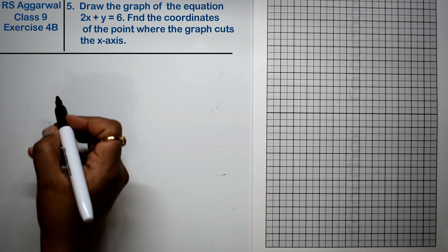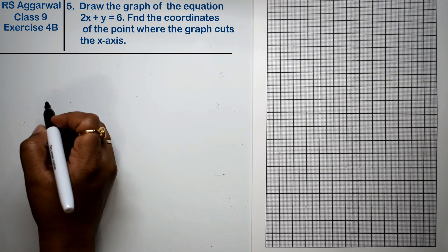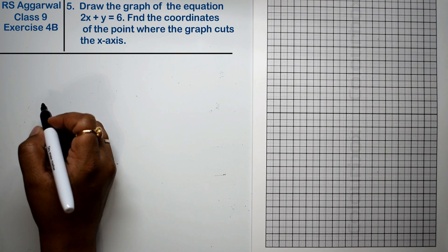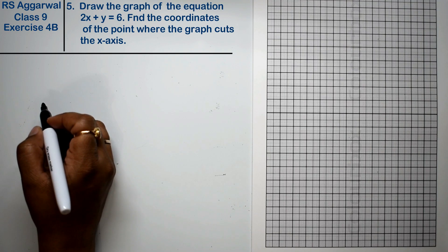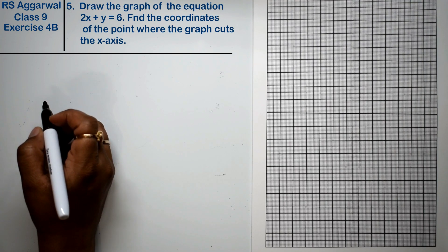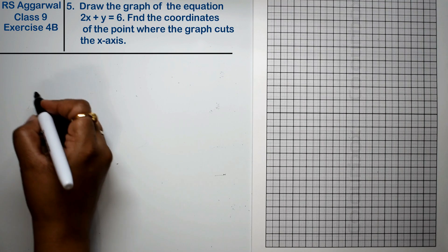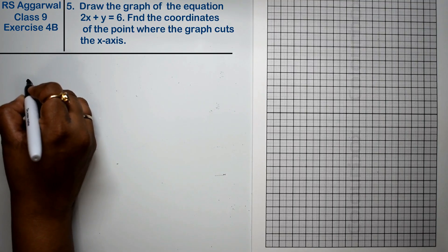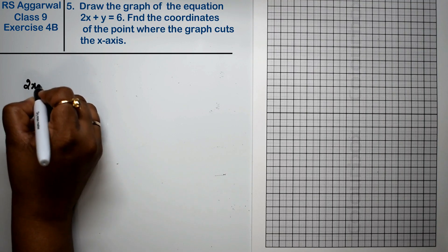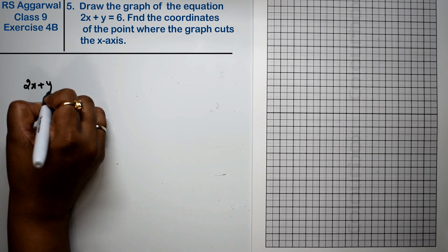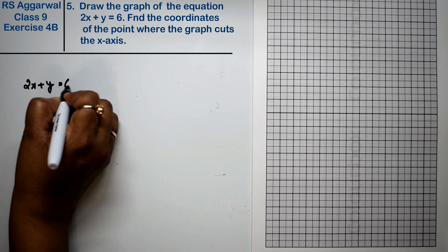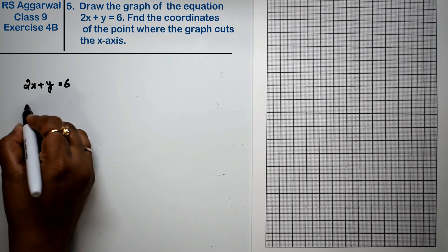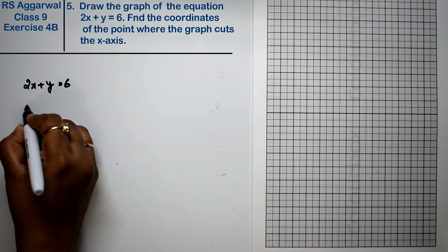Let's do question number 5 of exercise 4b, which is linear equations in two variables. Question number 5 is: draw the graph of the equation 2x plus y equals 6.